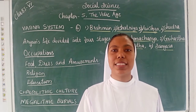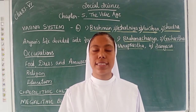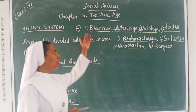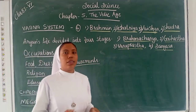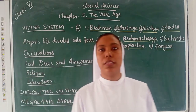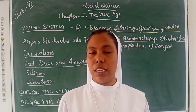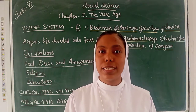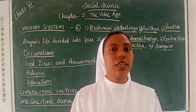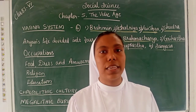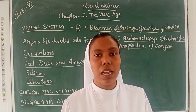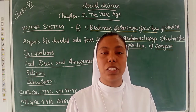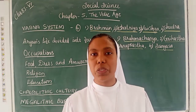Good morning dear students, welcome back to your social science class. Today let us continue in chapter 5, 'The Way We Age.' We were discussing about how the Harappan civilization came to an end and how the Indian civilization started. In the previous class we discussed that the Aryans came to India, captured the northern part, and started to live there, and the Indian civilization began.